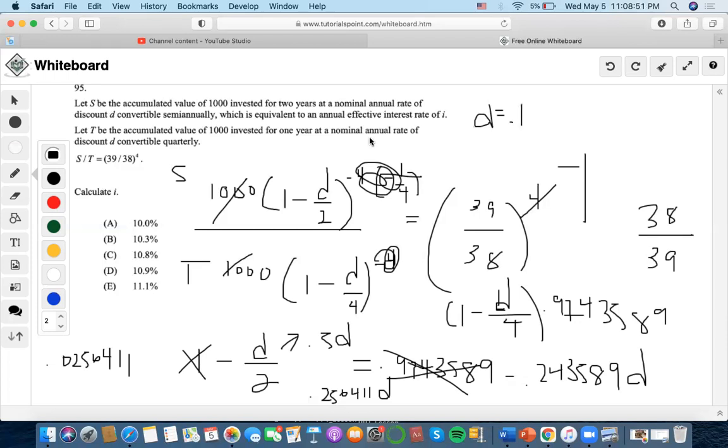Now it says here that this whole S is equivalent to an annual effective rate of i, which is what we're looking for here. So what we're going to do is make the nominal annual rate of discount convertible semiannually equal to an annual effective interest of i.